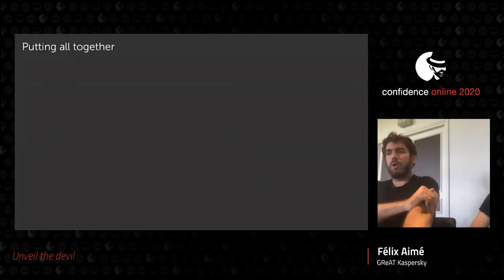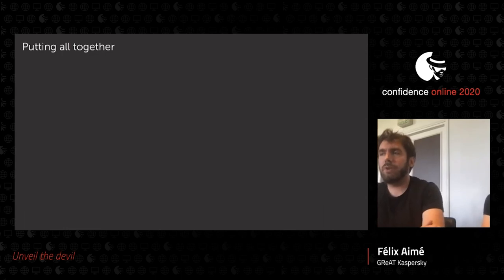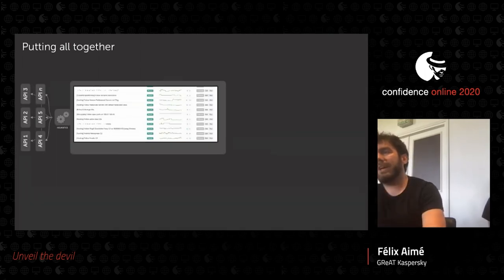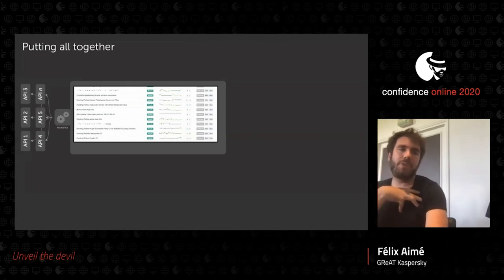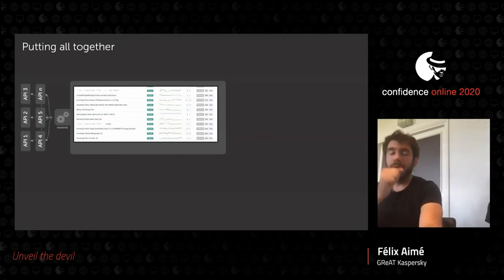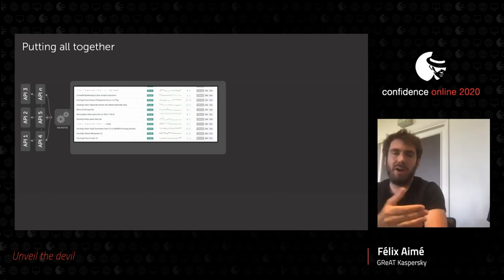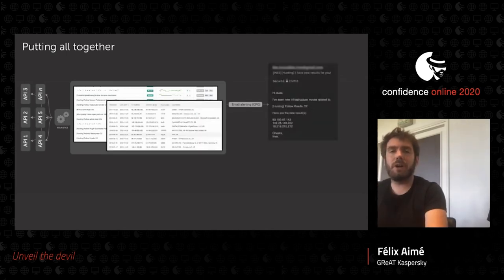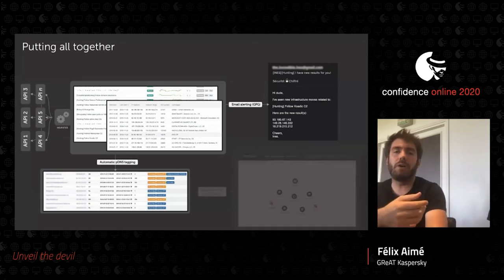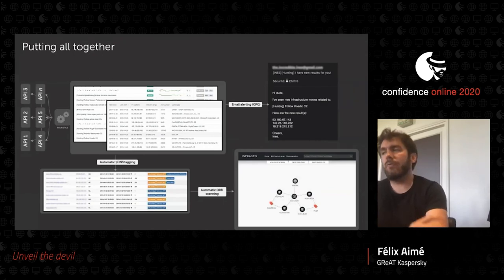To handle all of this at scale, we've created a small environment within GReAT. The first component is a cron-based system that queries different APIs — both custom and from public services — to run heuristic rules and automatically track infrastructures, whether open-source implants or custom ones. Each update is sent to the analyst via encrypted email, and all newly discovered hosts are automatically tagged in our passive DNS database, then immediately scanned by InfraGen for future correlation.